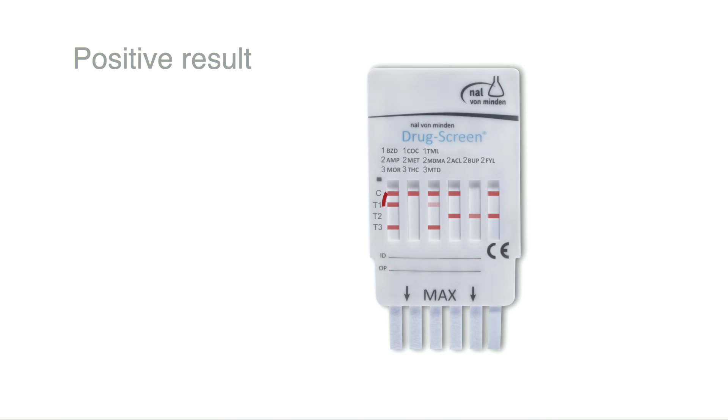A positive result is indicated by the absence of a line in the test region. A control line signifies that the test has performed correctly and should always be present. Compare your results with the charts given in the instructions.